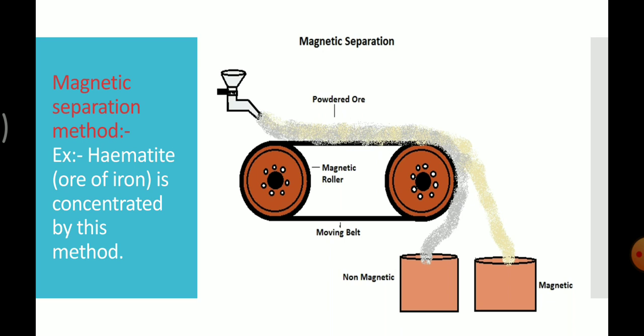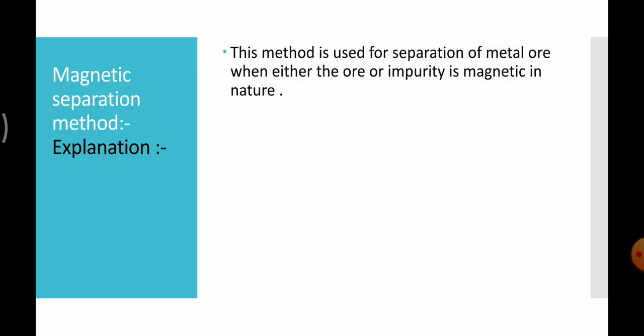This method is used to concentrate the magnetic ores from non-magnetic impurities, or vice versa. In this method, the ore is powdered and dropped over the moving belt of a magnetic roller. The magnetic particles are attracted by the magnet and form one heap, while non-magnetic particles form another heap. Example: hematite, ore of iron, is concentrated by this method.